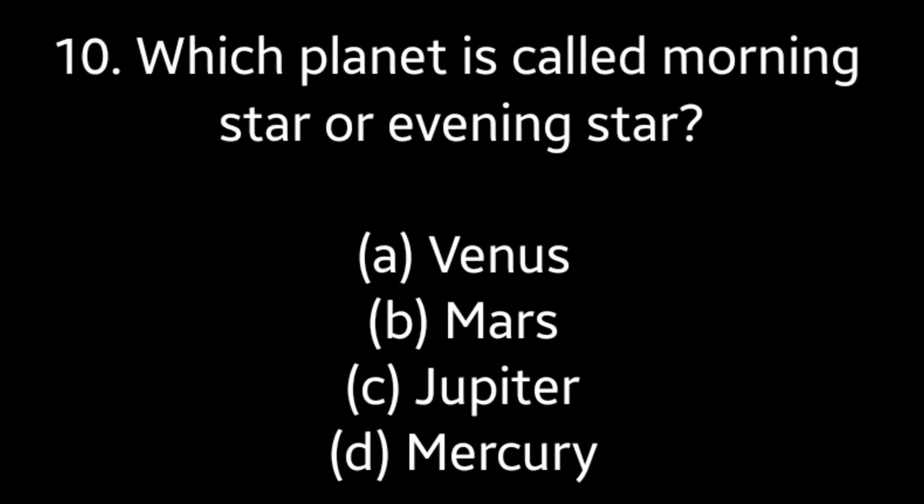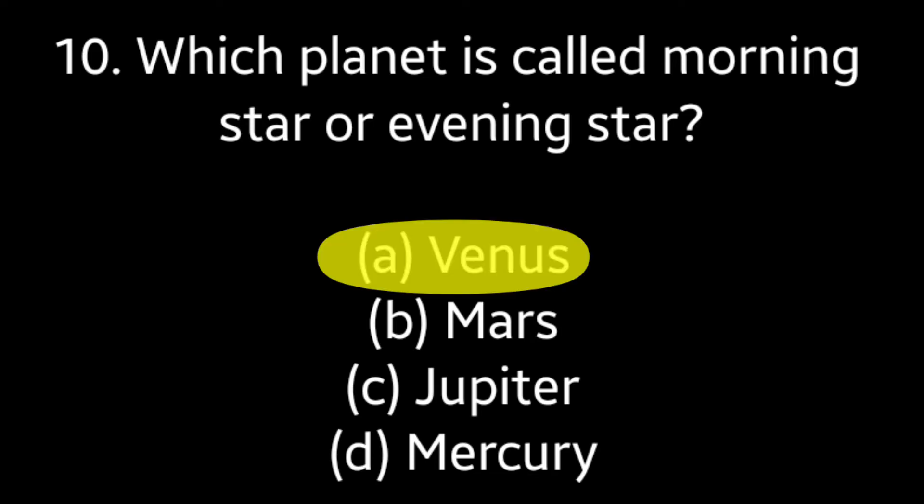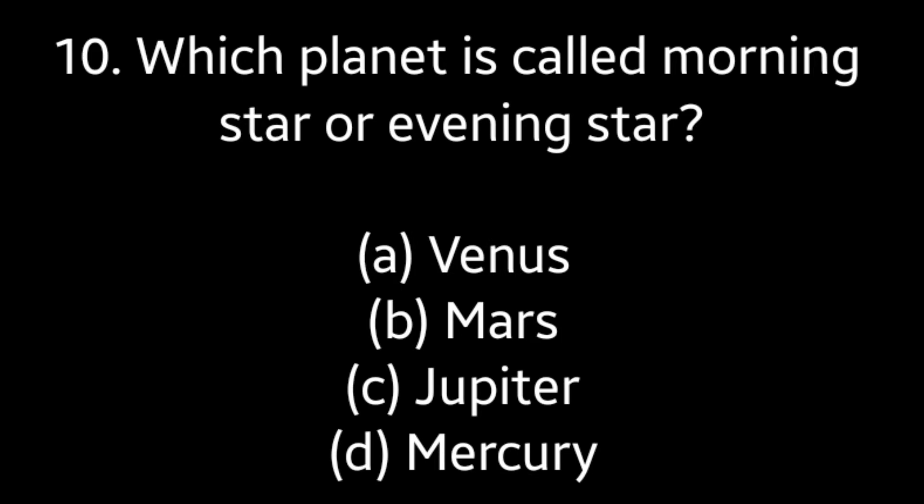Question number 10: Which planet is called the morning star or evening star? Options: Venus, Mars, Jupiter, Mercury. Answer is option A — Venus.